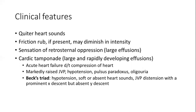Cardiac tamponade is acute heart failure occurring due to compression of the heart by fluid in the pericardial space, especially when fluid collects rapidly. This condition is characterized by Beck's triad — this is an important and frequently asked MCQ. Beck's triad consists of hypotension, soft or absent heart sounds, and raised JVP with prominent x descent but absent y descent. Hypotension occurs due to decreased cardiac output; JVP is raised because fluid constricts the heart, reducing venous return to the right side.